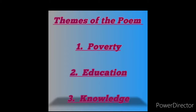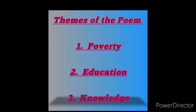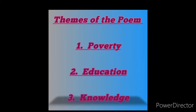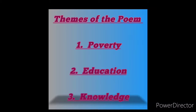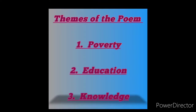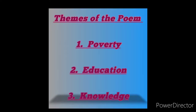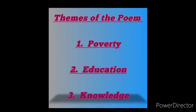Spender believes this poverty is created through the oppressive power of the upper class. Spender was affected by the struggles for equality in the United States because of his social and political involvement. Although this poem was written during the time of racial injustice in America, during the civil rights movement, racial injustice was very prevalent in the United States.